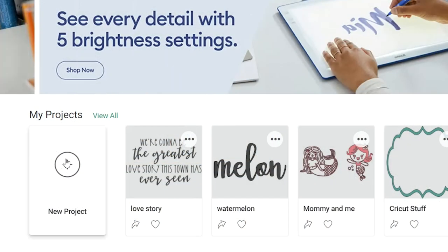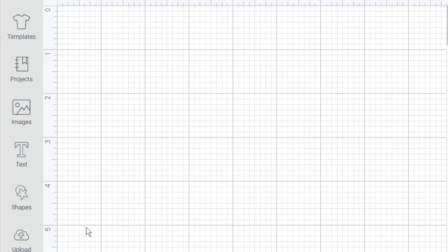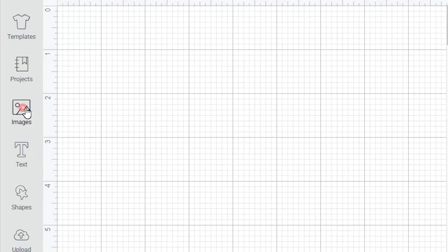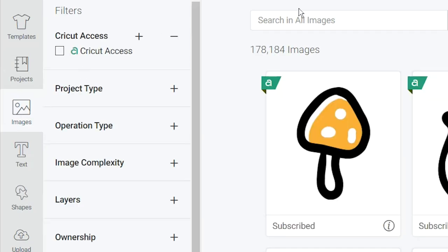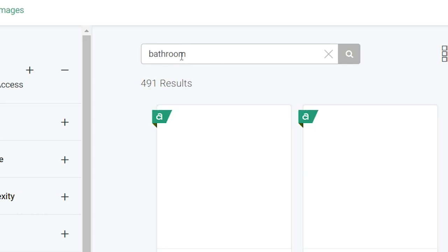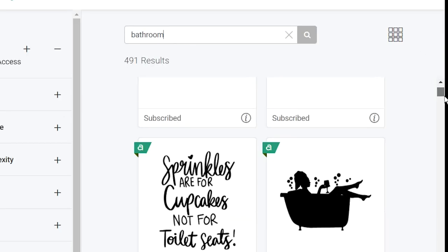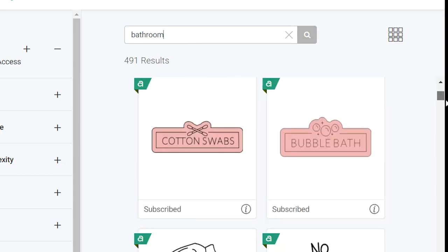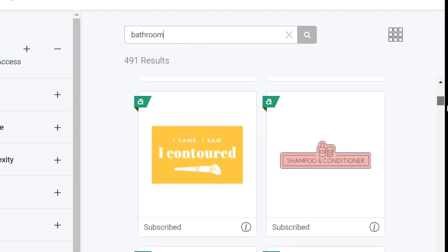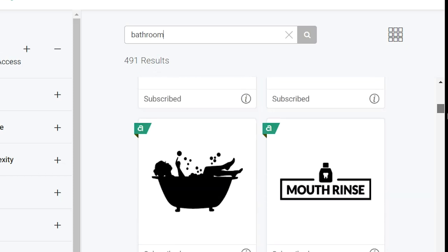So I'm just going to be opening a new project on my Cricut design space and then I'm going to be going to images and opening up that little image tab and it opens up like a search engine for you. You can type whatever you're looking for and for me, I was looking for some bathroom signs, bathroom decor. So I typed in bathroom.